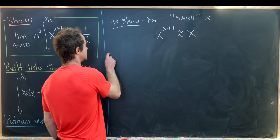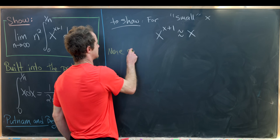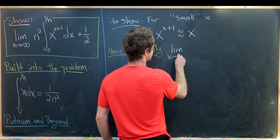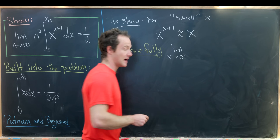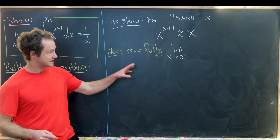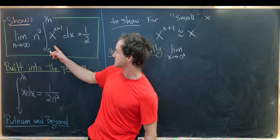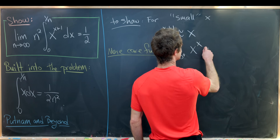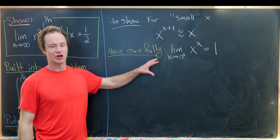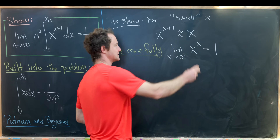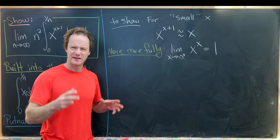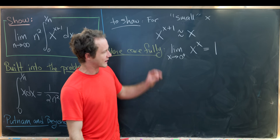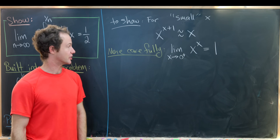So how can we make this more rigorous? We'll look more carefully at the limit as x goes to 0 from above of x^x equals 1. We only need the limit from above since we're dealing with positive x values. If we can show that, then multiplying both sides by x tells us x^(x+1) and x are essentially the same thing. There's more rigor to add, but starting with this limit puts us on the right track.